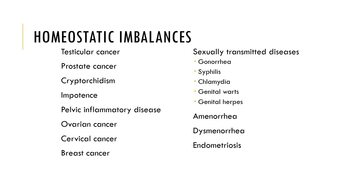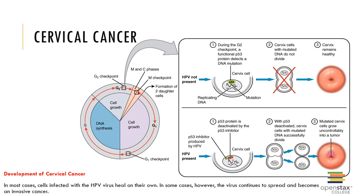Various sexually transmitted diseases are also noted, as well as amenorrhea — a cessation of menses — painful menstruation, and endometriosis, which is overproduction of the endometrium lining. The development of cervical cancer and its link to HPV is shown here. This concludes our overview of the reproductive system.